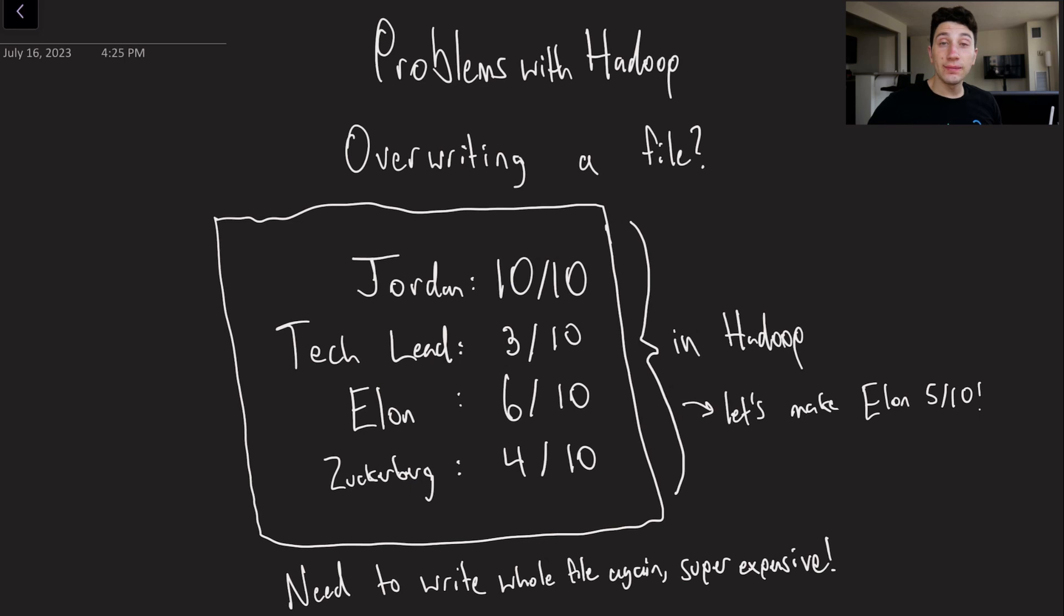All right, so assuming that you're not a phony you've obviously watched last video about Hadoop, but considering that most you are phonies you probably haven't. So in that case let's do a quick recap and say that HDFS or Hadoop Distributed File System is effectively just a distributed way of storing a bunch of different files in a manner that is fault tolerant, redundant, all that good stuff.